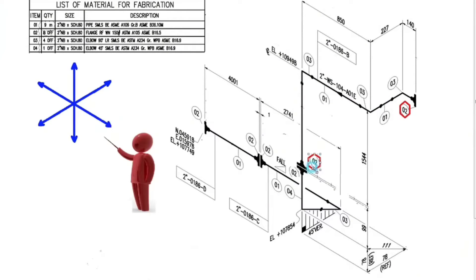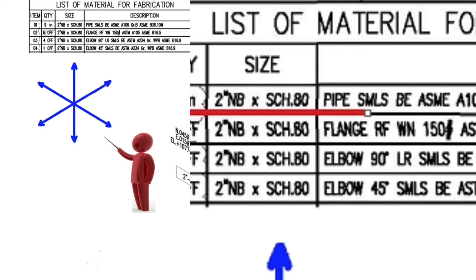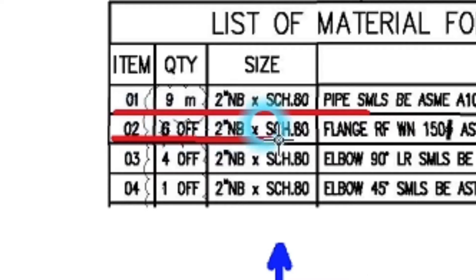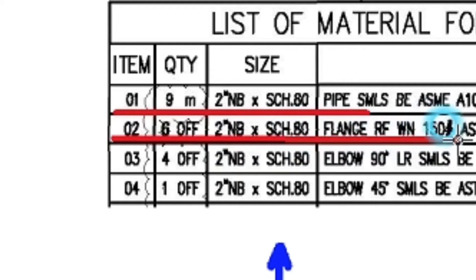These are details number 2. Let's look at the material list. Number 2: 6 pieces, 2 inch, schedule 80, flange, raised face, weld neck, class 150.